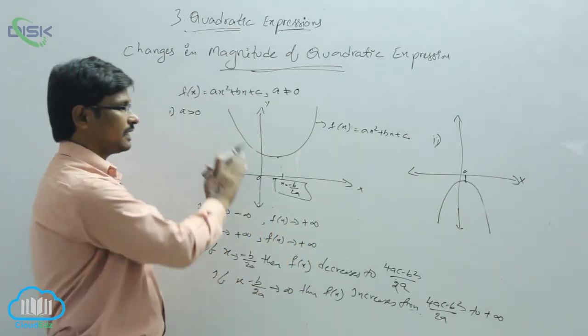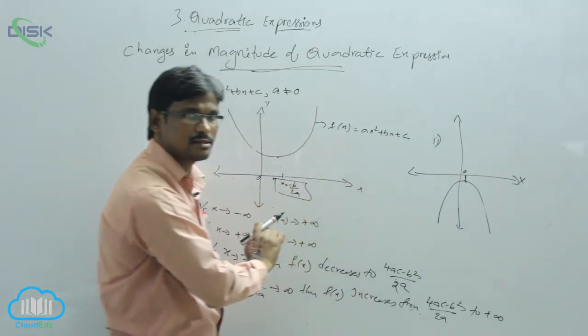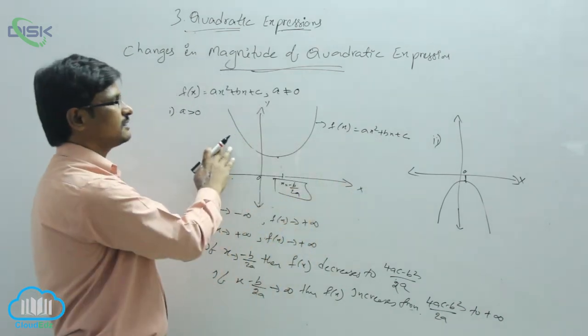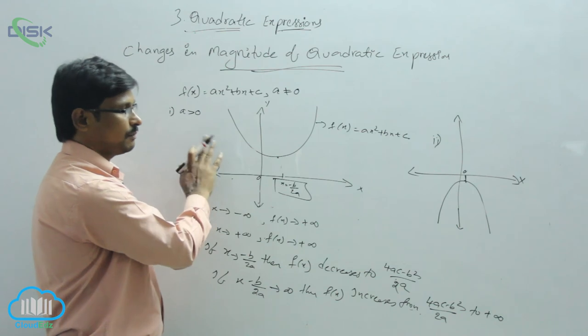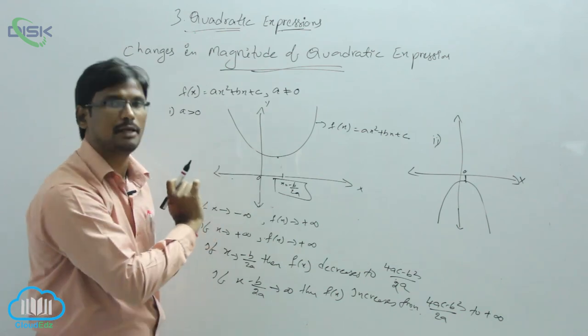So when a > 0 we have an absolute minimum, and when a < 0 we have an absolute maximum.